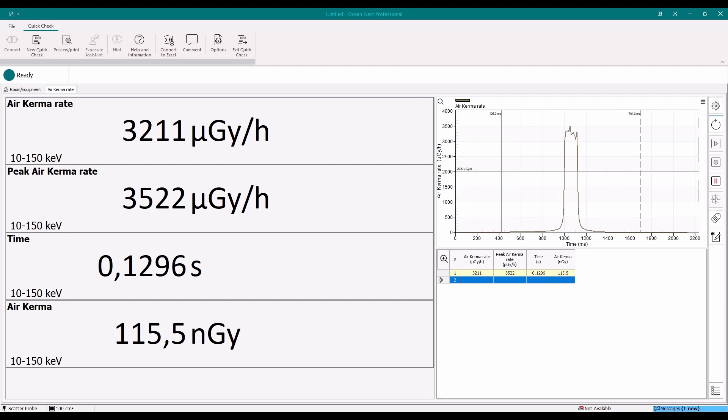On the display device the scatter probe will automatically trigger on detecting x-ray leakage and display values immediately. Air kerma rate can be read out if using continuous x-ray or air kerma for single exposure mode.